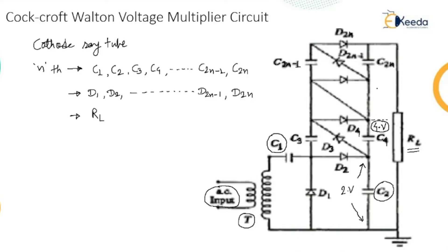This circuit is simple and compact when the load current requirement is less than one milliampere. The application already stated is the cathode ray tube. A wall-type pulse generator may be used instead of conventional AC supply, making the circuit compact. Therefore we are going to use this particular circuit shown in the diagram, called the Cockcroft-Walton voltage multiplier circuit.